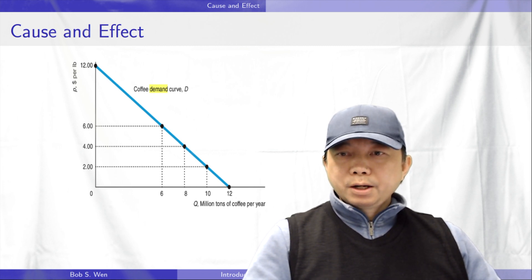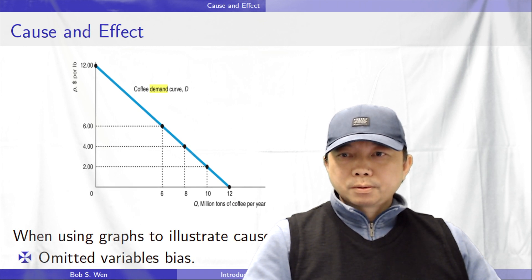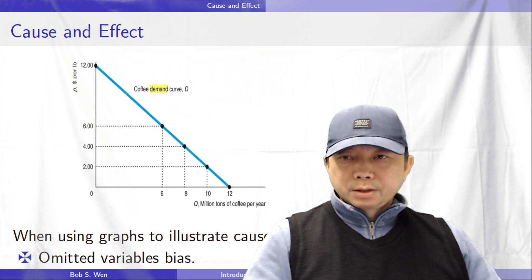When you use graphs to illustrate cause and effect, be aware of two problems: the omitted variable bias and the reverse causality.